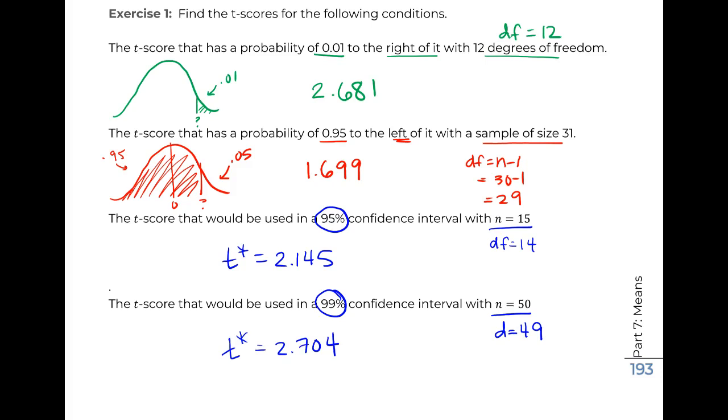So that's finding t-scores or critical values that we're going to use in this confidence interval calculation.